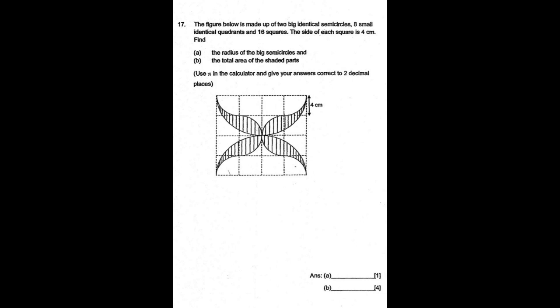As you see, part a of the question is very simple. It's a one mark question. Part b is a four mark question. For question a, the radius of the big semicircle is four times two, which is eight centimeters.